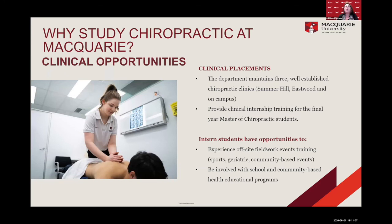Clinical placement is another strong aspect of the program. Students attend two out of three chiropractic clinics owned by the university, located at Summer Hill, Eastwood, and on campus, where they deliver treatment to public patients under supervision. Students also have the opportunity to experience off-site fieldwork events and training, with the department establishing these and students electing which weekends to attend. We look after Macquarie University rugby and football teams, a geriatric community near campus, and are involved in school and community-based health and educational programs. At all times, students are supervised by a registered chiropractor who can take responsibility and assist students.